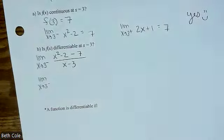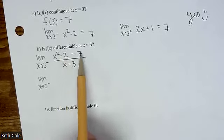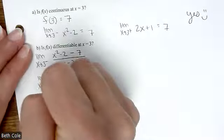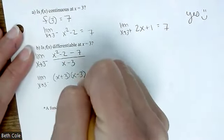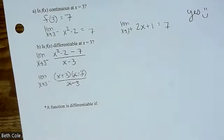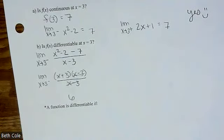So looking at the numerator — we actually have x squared minus 9. How would you split up x squared minus 9? Difference of squares: x plus 3 times x minus 3. The x minus 3s cancel, and then you just plug in 3: you get 6. Your derivative — which derivative means slope — your slope from the left is 6.